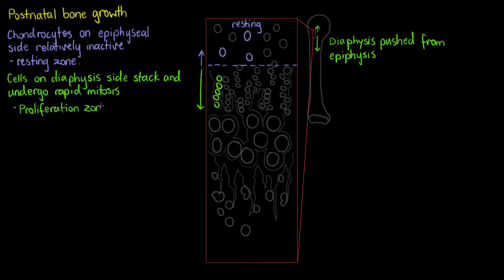So we've got our proliferation zone, and we'll just make a note that this is the area where cell stacking is happening. And in this area around the cells, we can also see that there's a fair bit of what looks like empty space, and this is actually where the cartilaginous matrix is going to be deposited by those proliferating chondrocytes.